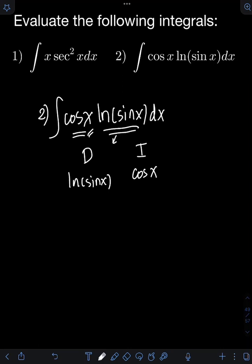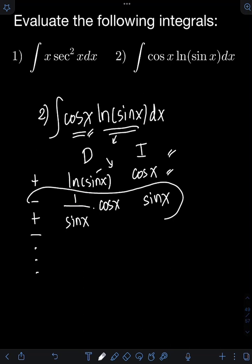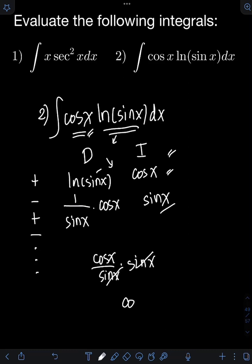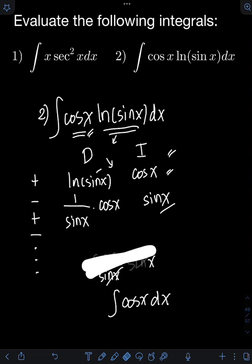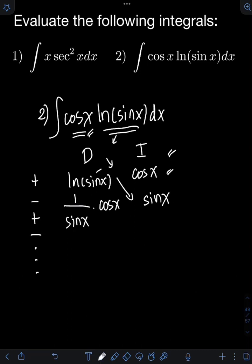We put the sign convention at the side: alternating signs plus, minus, plus, minus, and so on. Taking the derivative of ln sine x gives 1 over sine x times the derivative of sine x, which is cosine x. The integral of cosine x is positive sine x. Notice that if we multiply the terms on the last row — cosine x over sine x times sine x — it equals cosine x, whose integral can be evaluated already. So we can now stop differentiating and integrating.